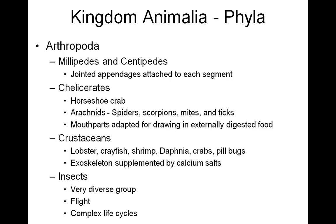Let's look at some of the groups within phylum Arthropoda. Millipedes and centipedes — these animals are made up of many, many segments, and on each segment there are attached jointed appendages. Next, we have the chelicerates — more like horseshoe crabs — and also the arachnids, which include spiders, scorpions, mites, and ticks. This group has mouthparts adapted for drawing in externally digested food. Now, my crustaceans — the lobsters, crayfish, and shrimp — little tiny freshwater animals like the daphnia, crabs, and even pill bugs.